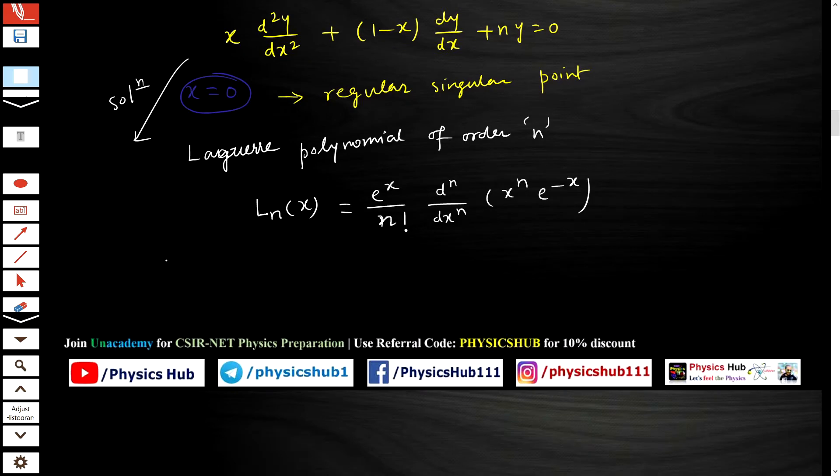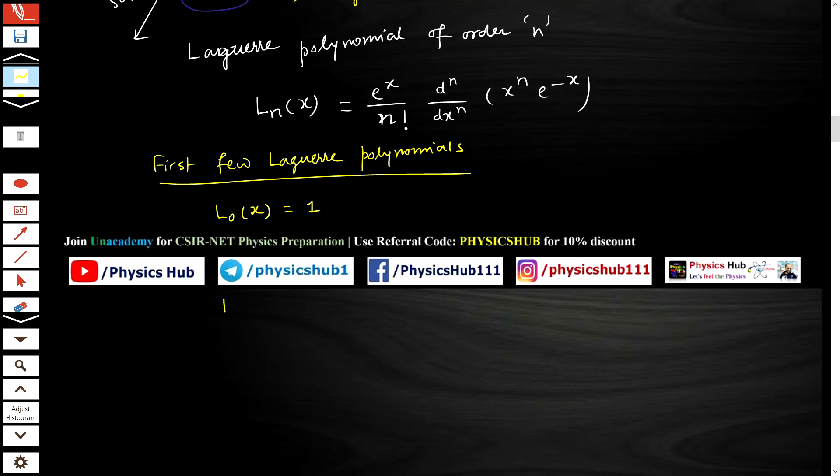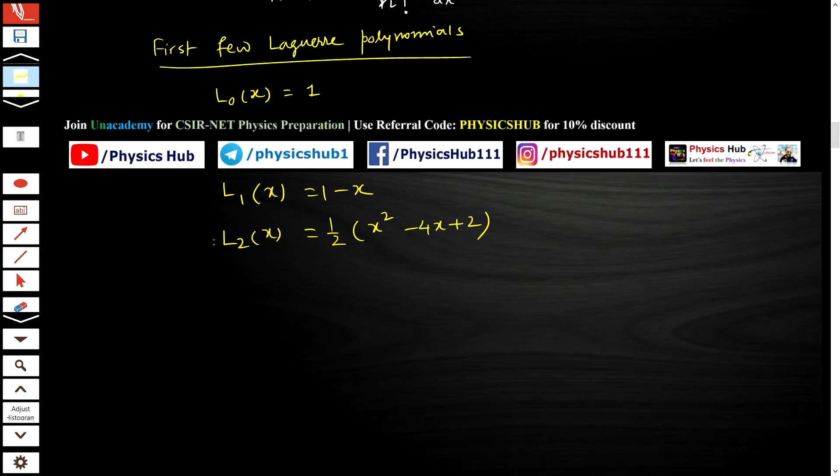Now like the previously discussed special functions, here also we should talk about the first few Laguerre polynomials. I am giving a list: L₀(x) = 1, L₁(x) = 1-x, L₂(x) = ½(x²-4x+2), and L₃(x) = ⅙(-x³+9x²-18x+6). These are the first few Laguerre polynomials. Let us try to draw them.